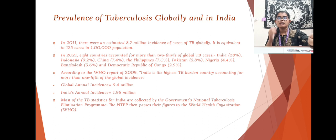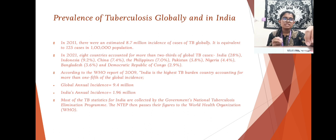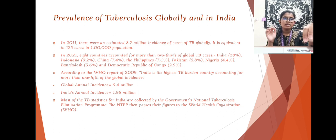In 2011, there were an estimated 8.7 million cases of TB globally, equivalent to 125 cases per 1 lakh of population. In the year 2021, 8 countries accounted for more than two-thirds of global TB cases.